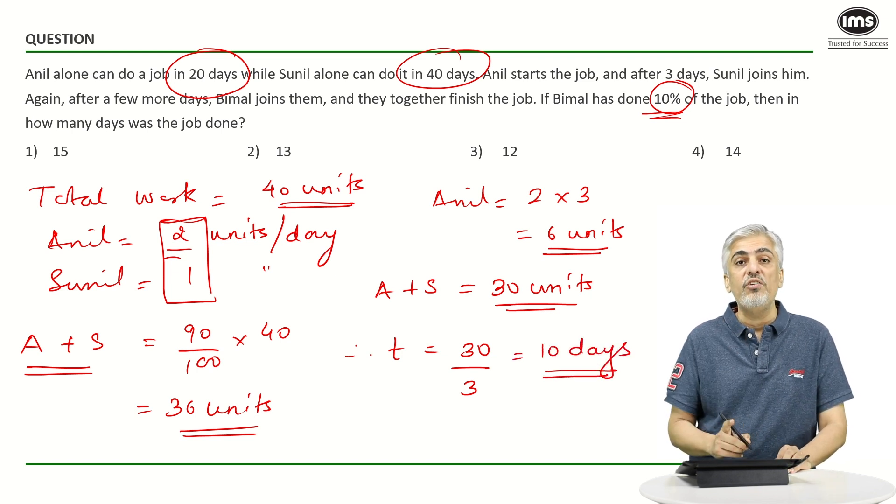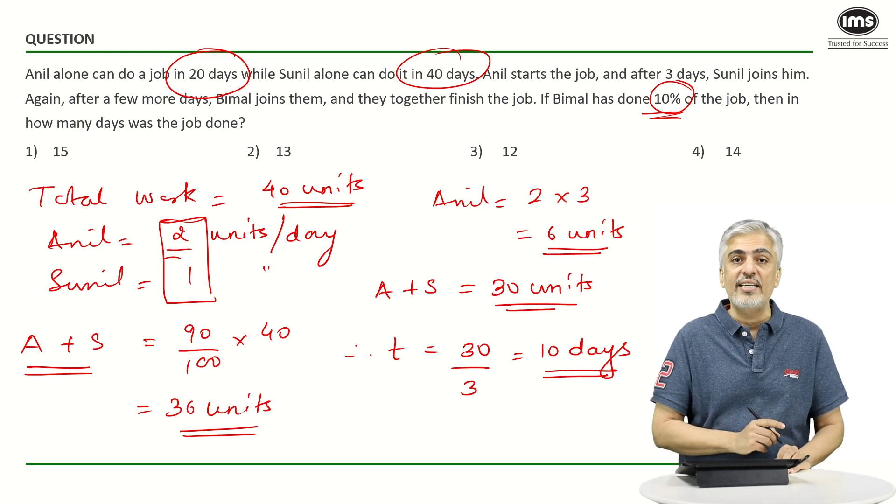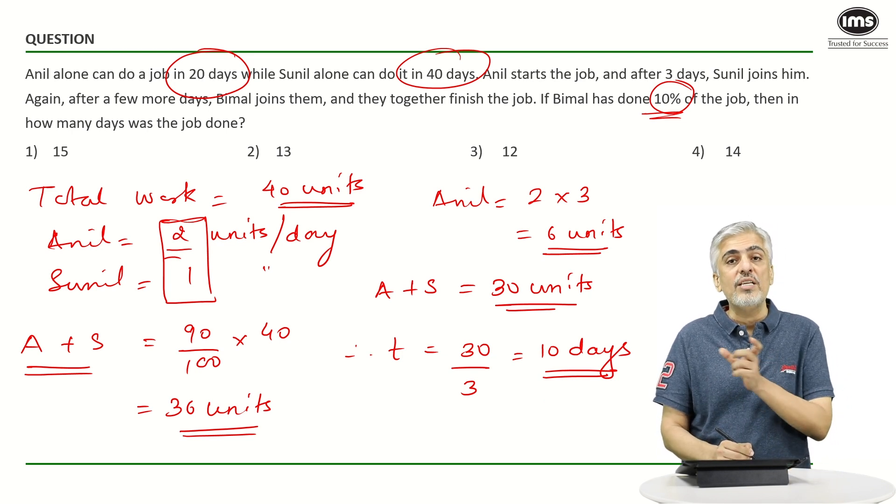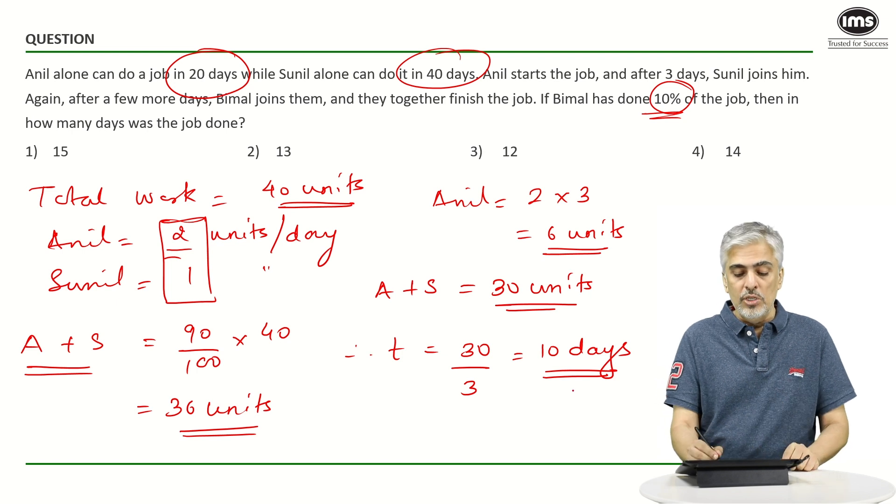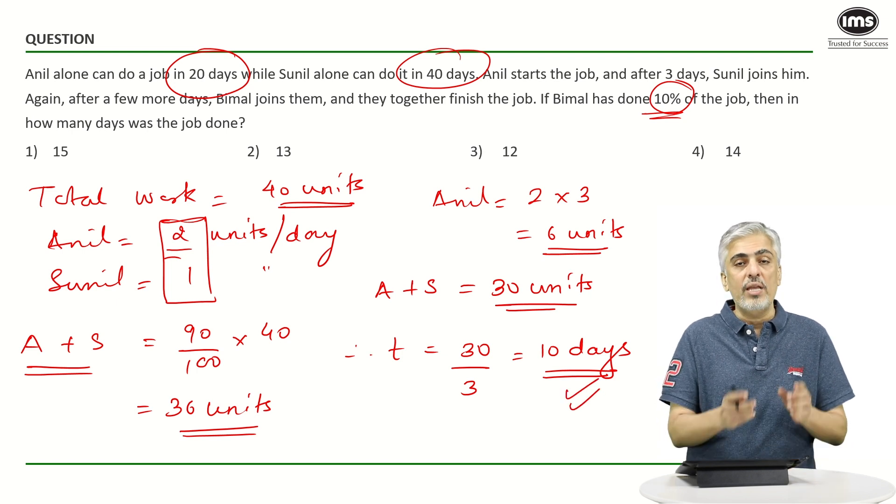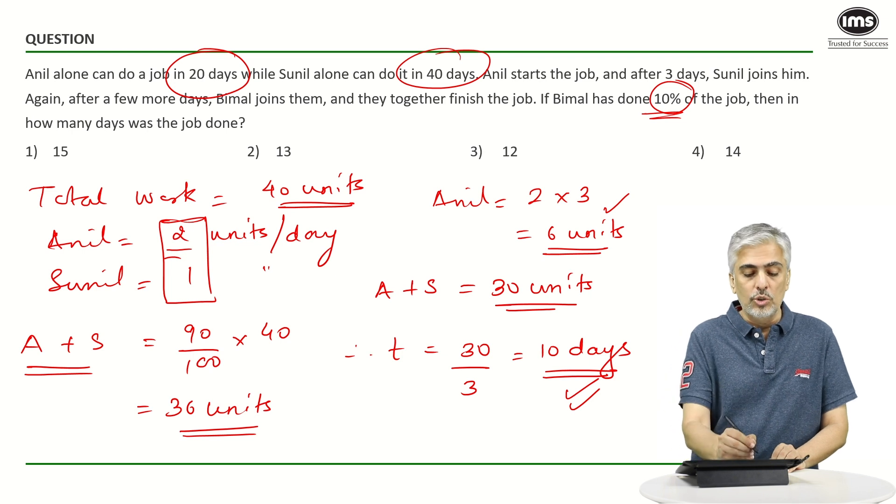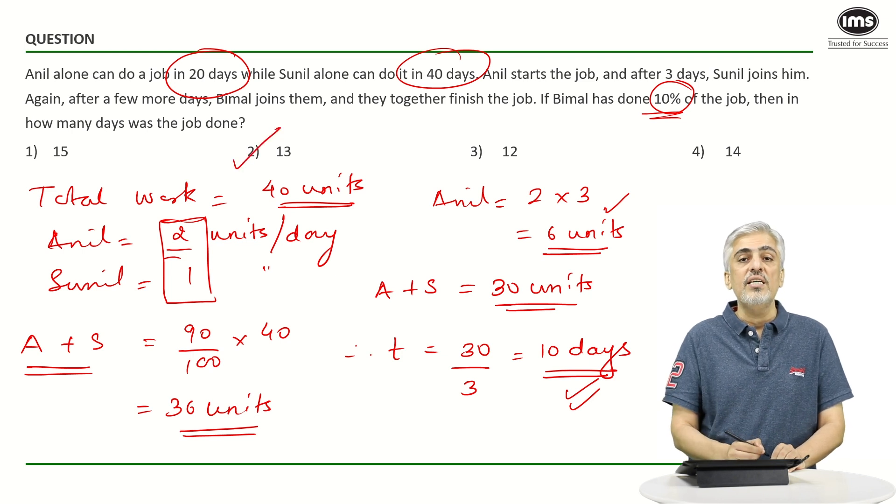Please read the question carefully. Luckily there was no option of 10 days otherwise a lot of students would have made that mistake. They've asked in how many days was the job done in all. So 10 days they work together. Three days Anil has worked alone. So the total time taken is 13 days which is the second option.